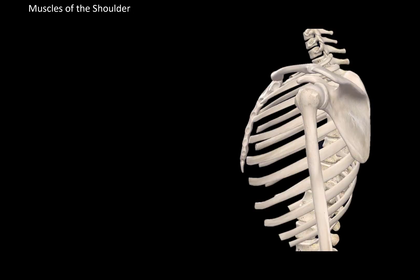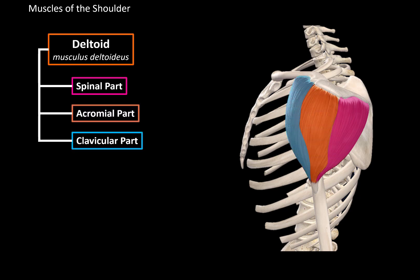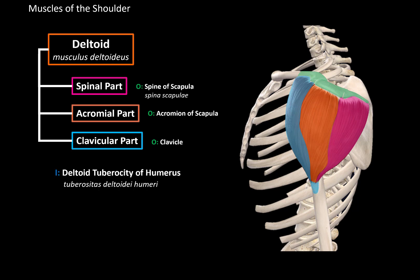We will add the skeleton to use it as a landmark. First, we have the deltoid muscle. This is a large muscle on the shoulder that is used as an injection site. This muscle is divided into three parts according to their place of origin: the spinal part, acromial part, and the clavicular part. The spinal part originates from the spine of the scapula, the acromial part originates from the acromion of the scapula, and the clavicular part originates from the clavicle. They all unite and insert at the deltoid tuberosity of the humerus.